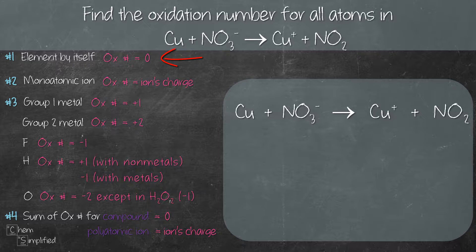Any element by itself will have an oxidation number of zero. In this equation, we have one element by itself which is Cu. So that means Cu's oxidation number is going to be zero.